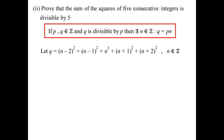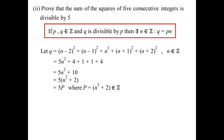The minus AB terms cancel with the plus AB terms, leaving just the squared terms. I get five lots of N squared, then the last terms squared: (−2)² = 4, (−1)² = 1, 0, 1², 2² = 4. So the expression becomes 5N² + 10. I can factorize out 5 to get 5(N² + 2).